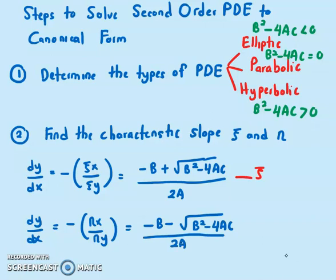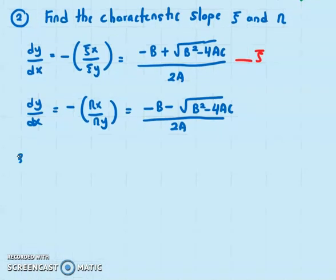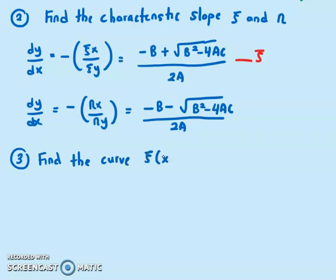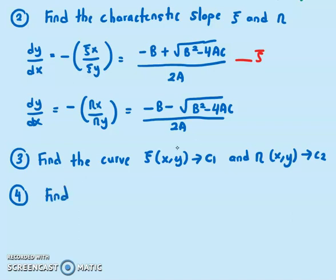Once we have found the characteristic slope for psi and eta, the third step is to find the curve psi(x,y) which is my C1, and eta(x,y) which is my C2. And then the fourth step is to find, once you find the curve, write it in terms of C1 and C2, we can find psi_x, psi_y, eta_x, and eta_y.